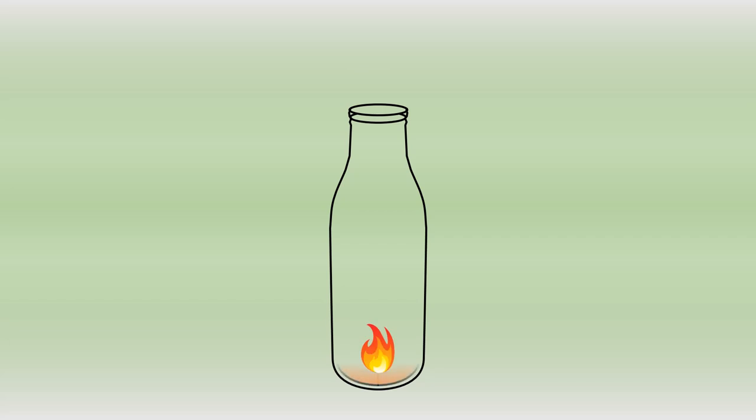The air molecules in the bottle heat up due to burning camphor. Heated air expands in the bottle and occupies more volume. When the egg is placed on the bottle, the flame extinguishes due to lack of oxygen.